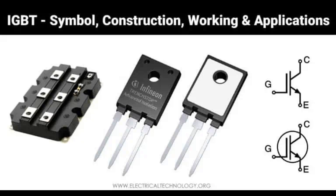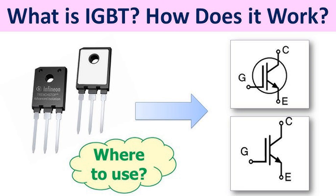Key operational features: Gate control — the gate voltage controls the switching between on and off states. A small gate voltage is enough to switch large amounts of current, making the IGBT a voltage-controlled device, like a MOSFET. High voltage blocking — in the off-state, the IGBT is capable of blocking high voltages across the collector-emitter terminals due to the N-drift region. High current capability — in the on-state, it allows for a large current flow thanks to the injected charge carriers, both electrons and holes, similar to a BJT.